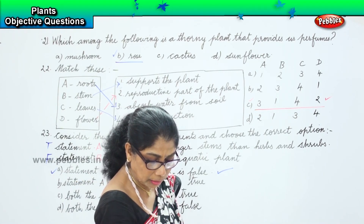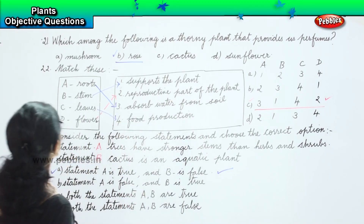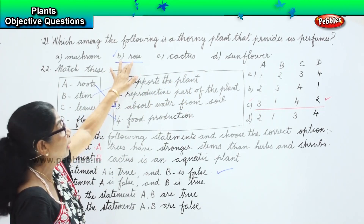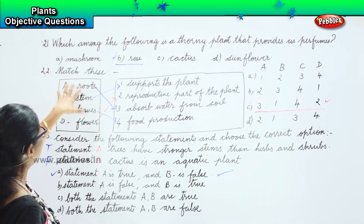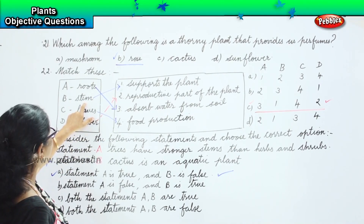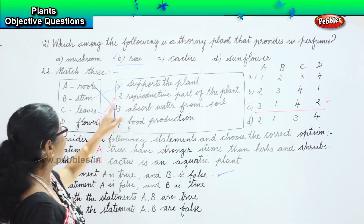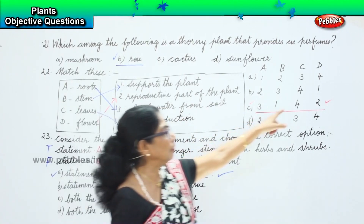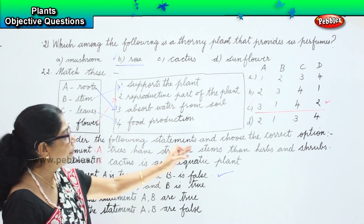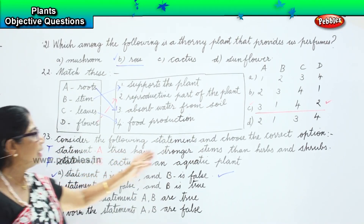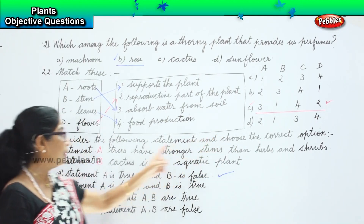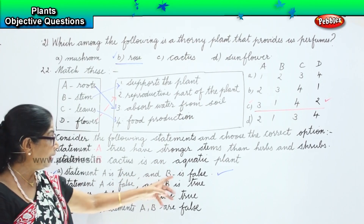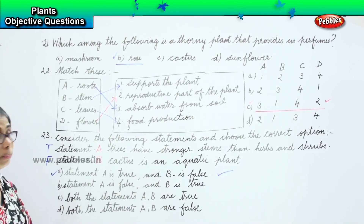Now let us recap. Question 21: which among the following is a thorny plant that provides perfume? Answer: Rose. Question 22 — match these: roots absorb water from soil, stem supports plant, leaves do food production, flower is the reproductive part — giving us option 3,1,4,2 which is option C. Question 23: trees have stronger stems than herbs and shrubs — true. Cactus is an aquatic plant — false. So statement A is true and B is false — that is the correct answer.